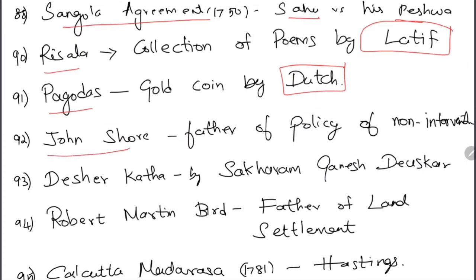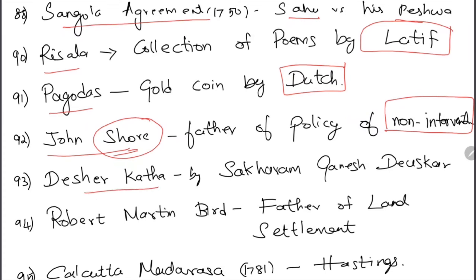John Shore is called the father of the policy of non-interference — a clue: John Shore always stood on the shore, never getting into the ocean or trouble, always staying within his boundaries. Desher Katha was written by Sakharam Ganesh Deuskar.